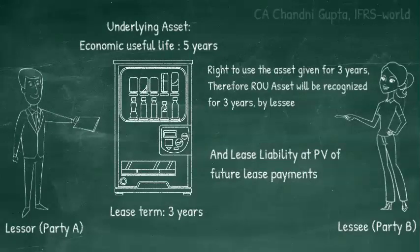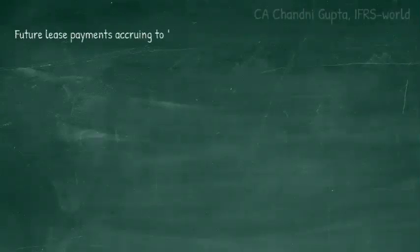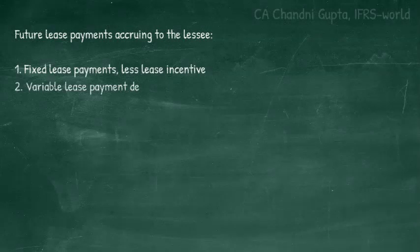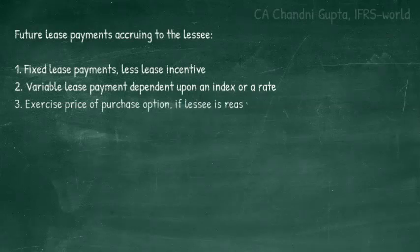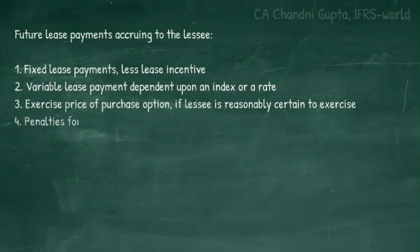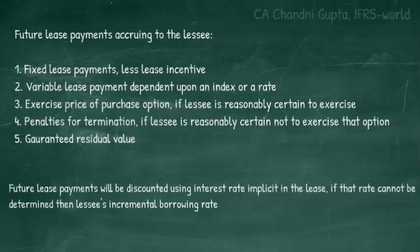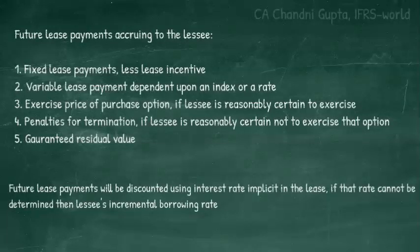The lease liability will be the present value of the future lease payments — payments that will accrue to the lessee. These include: fixed lease payments; variable lease payments dependent upon an index or rate; the exercise price of the purchase option if the lessee is reasonably certain to exercise it; any penalties on termination if the lessee has a termination option and is reasonably certain to exercise it; and the guaranteed residual value. All future payments will be discounted using the interest rate implicit in the lease — the rate at which the net investment in lease equals the fair value of the asset. This rate is determined by the lessor.